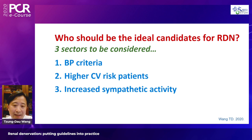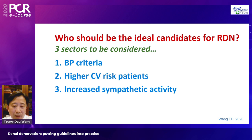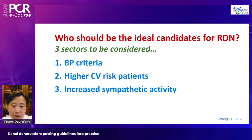When considering who will be a candidate, we look at three aspects: the blood pressure profile most suitable for renal denervation; the patient characteristics, particularly high-risk patients who will get more benefit from blood pressure lowering; and features related to sympathetic overactivity in patients with hypertension.